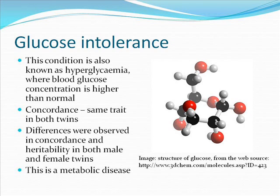Genetic concordance means the probability of a certain characteristic being present in two individual subjects, where one of the two subjects should have a certain characteristic — in this case, glucose intolerance. From the study, it was found that monozygotic twins have a very high concordance rate for abnormal glucose intolerance. On the other hand, dizygotic twins had a lower concordance rate. This showed that genes have a function relating to glucose intolerance occurring earlier. It was also found that glucose intolerance is a metabolic disease.